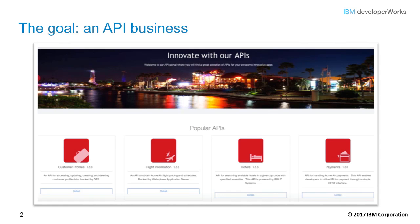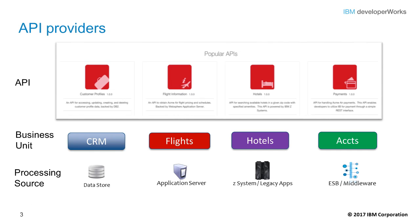In today's business environment, it is necessary for enterprises to offer application programming interfaces to the services that they offer — they must be in the API business. Here we see that the APIs offered by our example Acme Air Corporation are actually provided by four different business units of the enterprise. Each unit is using their own unique processing source to provide the resources made available through the API. It is for this reason that Acme Air chose API Connect, because of its ability to access all of these different kinds of processing sources and still offer a uniform API for each type of information.